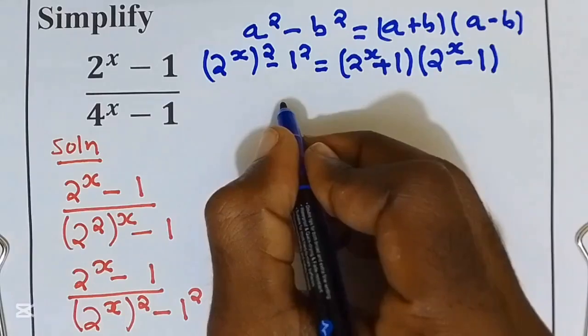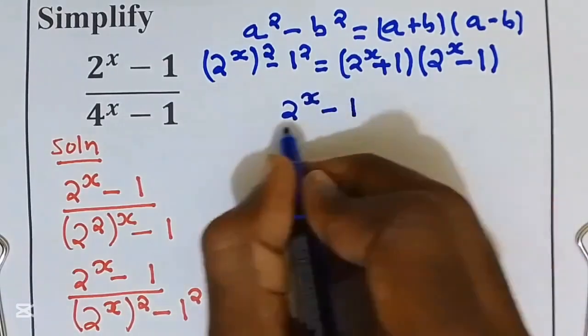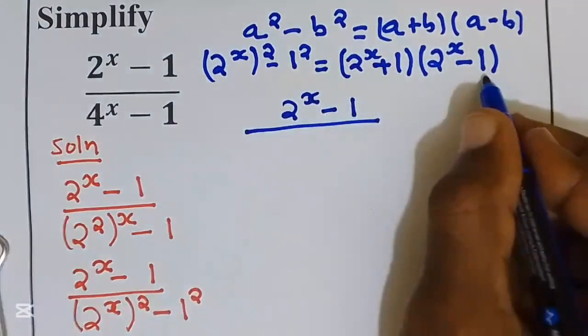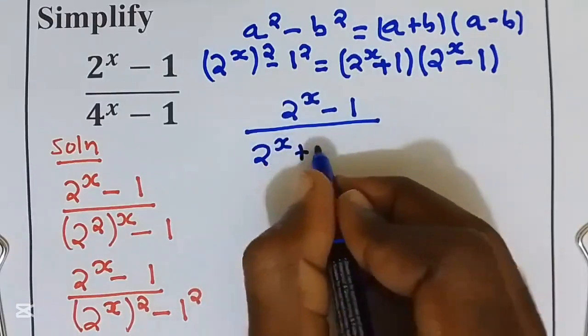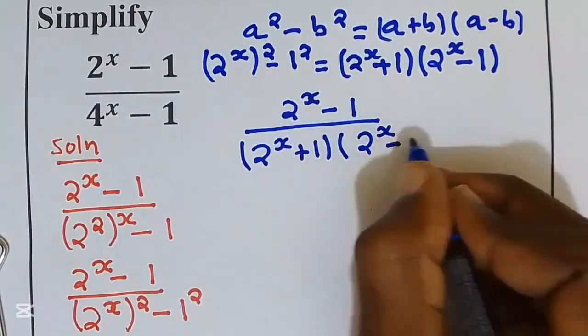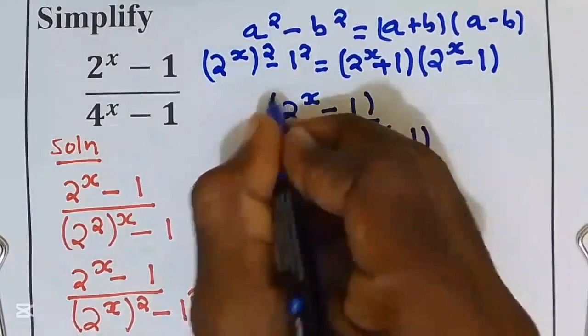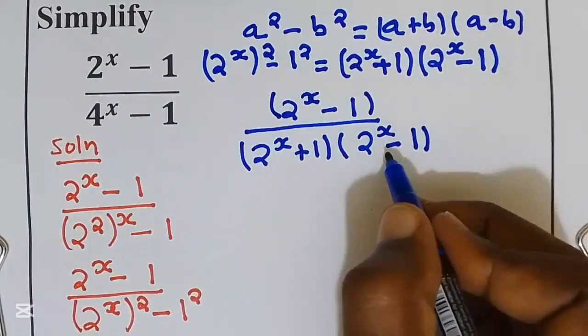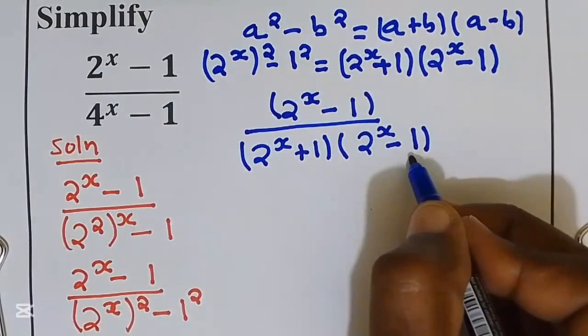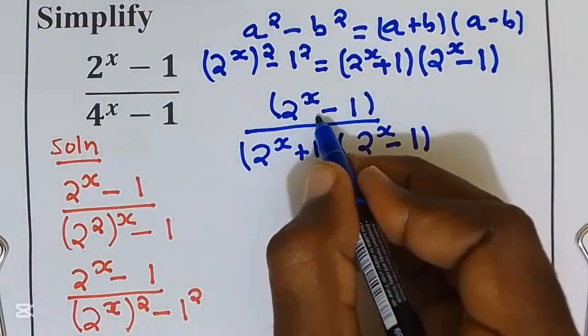Now I'll substitute it into the expression. We have (2^x - 1) over (2^x + 1)(2^x - 1). Let's put the numerator in brackets so we can see we have 2^x - 1 in the denominator, which we can simplify with the one in the numerator.